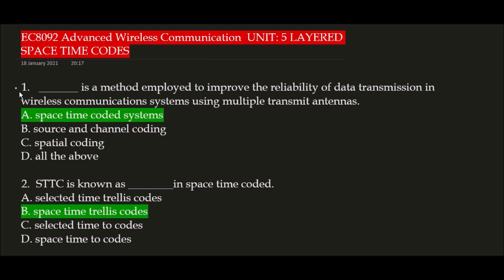First question: blank space is a method employed to improve the reliability of data transmission in wireless communications systems using multiple transmit antennas. The correct answer is option A, Space Time Coded Systems. Space Time Coded Systems is a method employed to improve the reliability of data transmission in wireless communications systems using multiple transmit antennas.